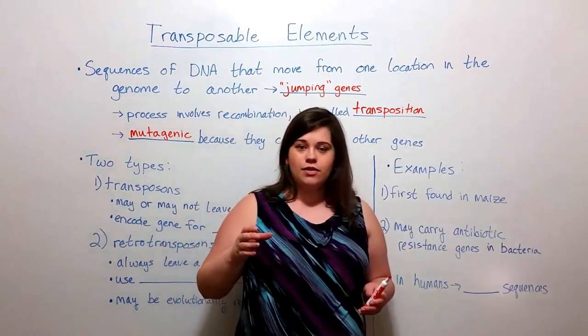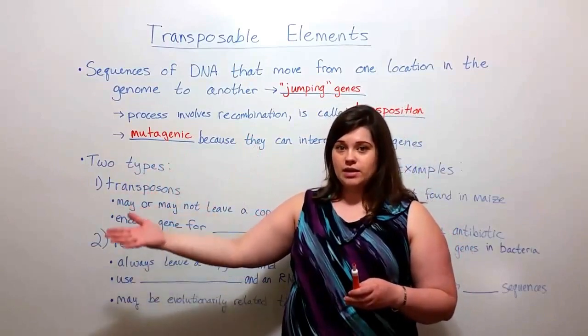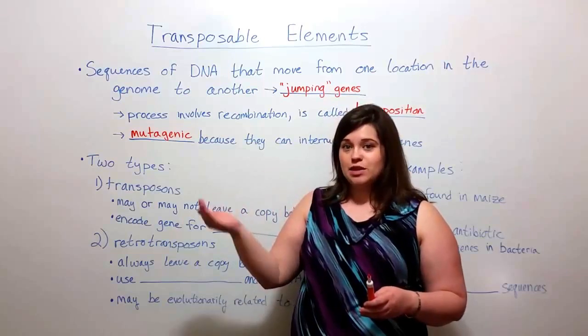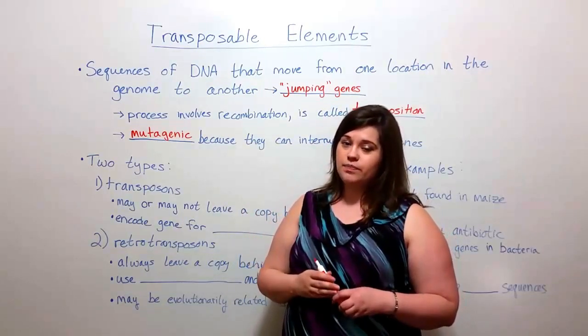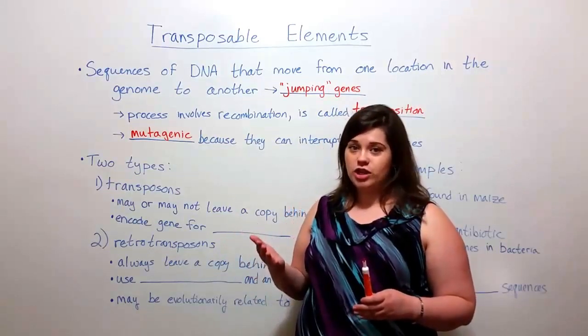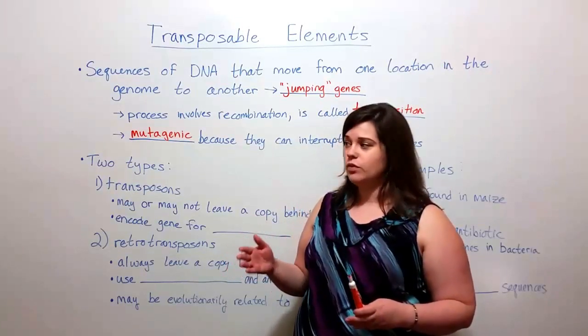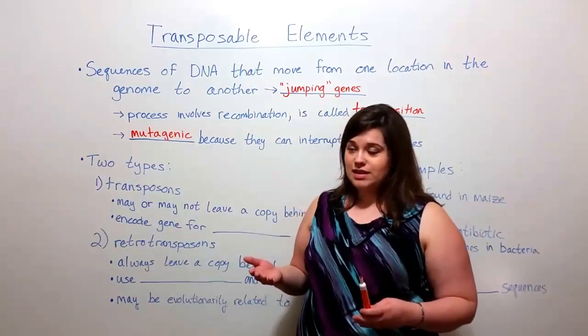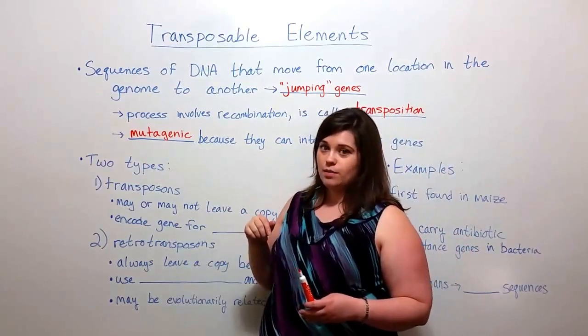This means that if you have a transposable element leave its original place in the genome and move to a different place in the genome, sometimes the place to where it moves is right in the middle of another gene. And by disrupting or interrupting that other gene, that other gene may no longer be functional, resulting in phenotypic change and sometimes even disease. And so that is where the mutagenic property comes from.